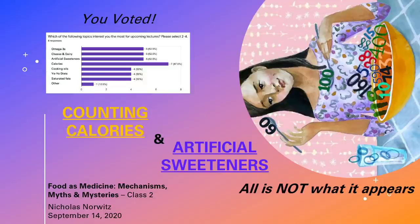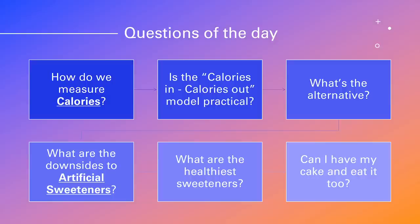Without further ado, the questions for this lecture in sequence: How do we measure calories? What really is a calorie? Then an evaluation of the calories-in-calories-out model — is it actually practical? We'll talk about an alternative to calories-in-calories-out, then discuss artificial sweeteners: what are the downsides, which are the healthiest if you choose to have them, what are some alternatives altogether, and finally the most important question of the lecture — can I have my cake and eat it too?